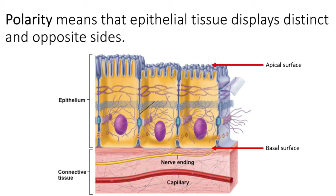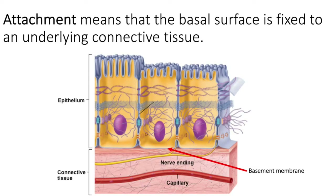The function of those sides is probably going to be different. On the apical surface, stuff might come into the cell; on the basal surface, stuff might go out into your body — which would certainly be true if this was the lining of your small intestine. The experience and functions of those surfaces are often different, and so polarity means the cell is interacting with two distinct environments.